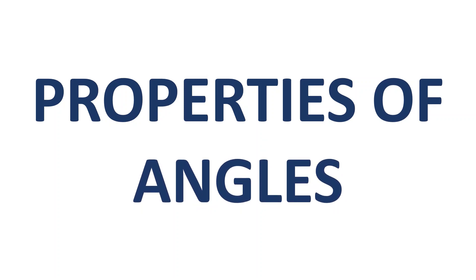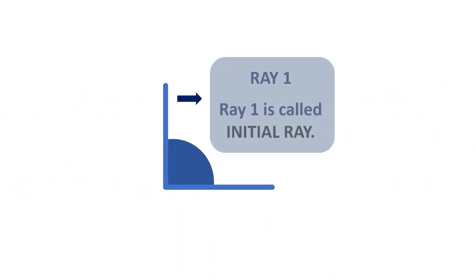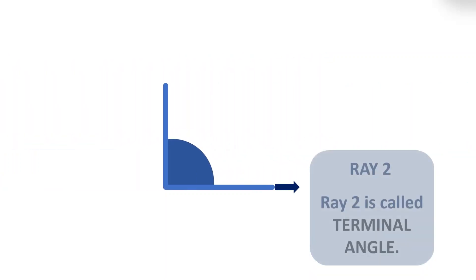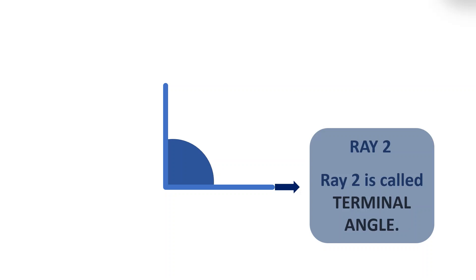Properties of Angles. Ray 1 is called Initial Ray. Ray 2 is called Terminal Ray.